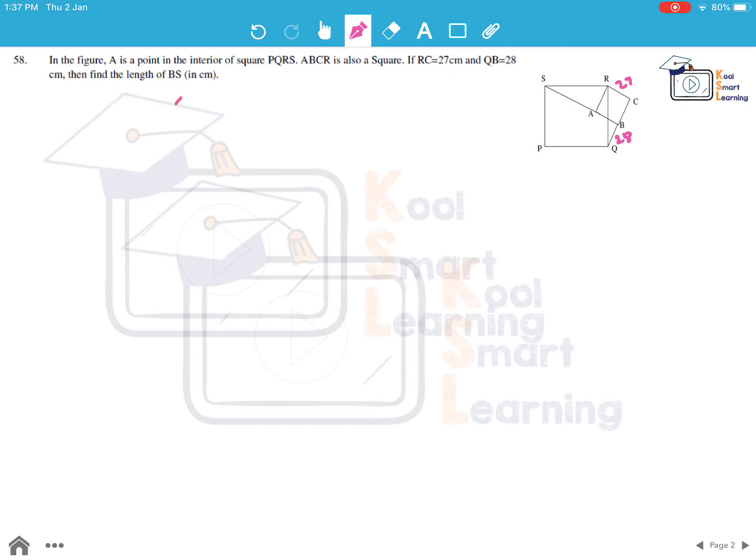Now we know that CQ is equal to 28 plus 27. Why? Because they are given that ABCR is also a square, so this side will be 27, so this becomes 55 cm. Now RC is 27 cm.